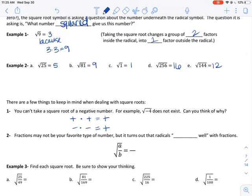So there's not really a way to get a negative number, at least not that we know of. Fractions may not be your type of favorite type of number, but it turns out that radicals play well with fractions.